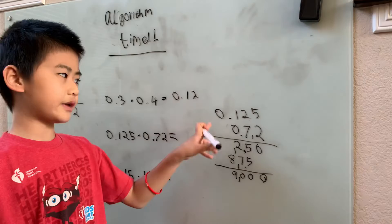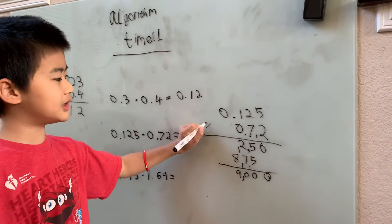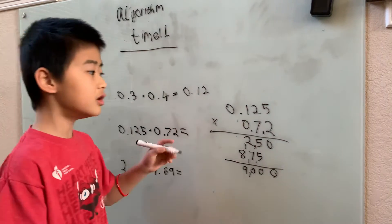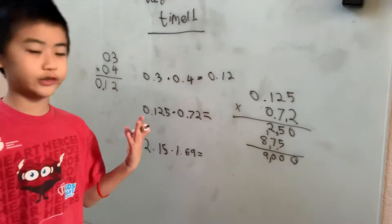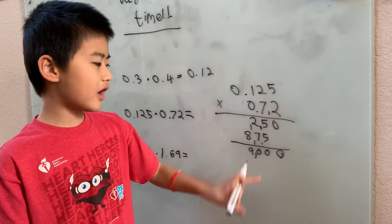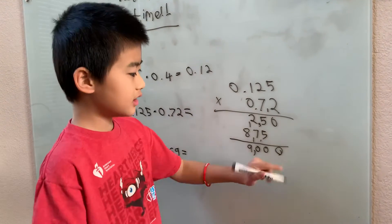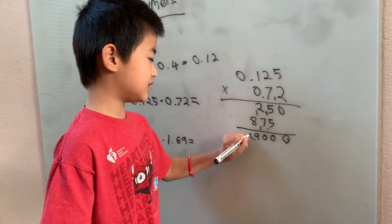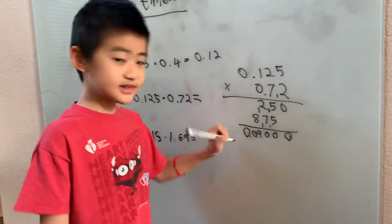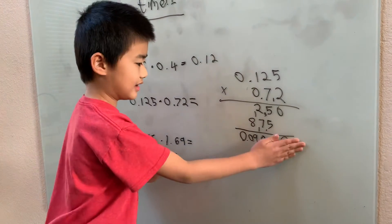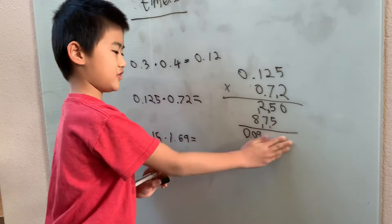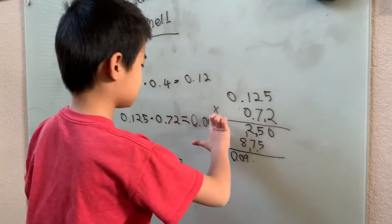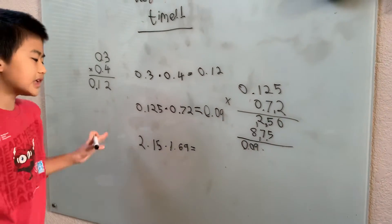But we can't forget that it's 0.125 times 0.72, not 125 times 72. Just like before, we count the number of digits after the decimal points: 0.125 has three digits, 0.72 has two — that's five total. So there have to be five digits after the decimal point in our answer. Placing the decimal gives us 0.09000, and removing the trailing zeros, our answer is 0.09.